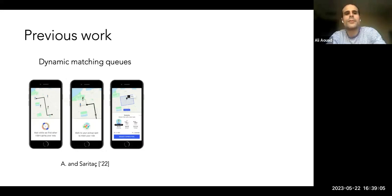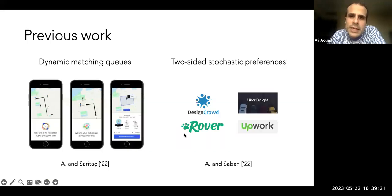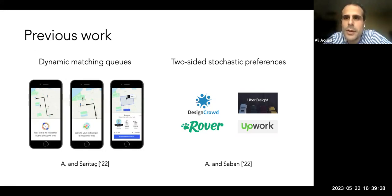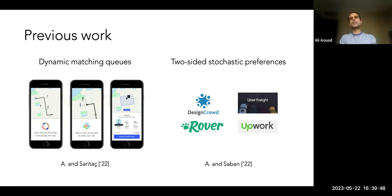Those queuing aspects are overlooked in the canonical picture and are very important for service platforms. In previous work, we looked at online matching when controlling a matching queue. Another important consideration is that in many service markets, unlike pumpkins, there are stochastic preferences on both sides of the market. We've looked at how to model two-sided preferences and what it means for the tradeoff.